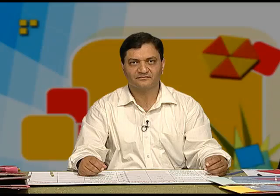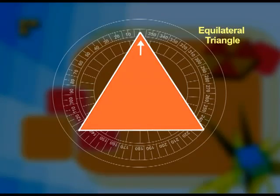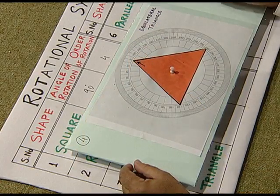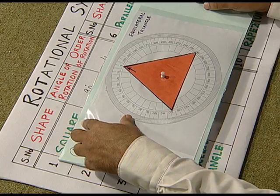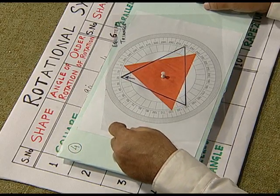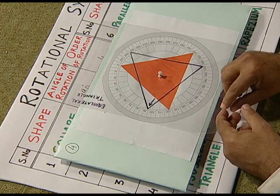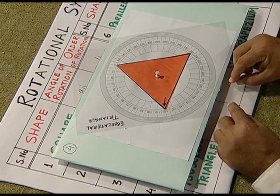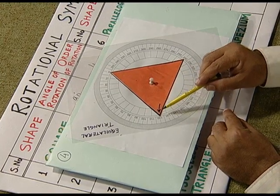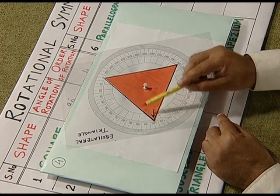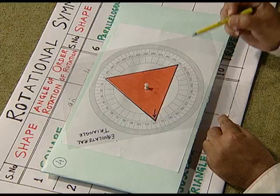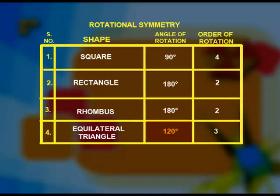Similarly, we take the case of an equilateral triangle. The top position is shown by a small arrow. When we start rotating it, the triangle coincides with itself after a rotation of 120 degrees. It is clear that it coincides only after 120 degrees, so the angle of rotation is 120 degrees.